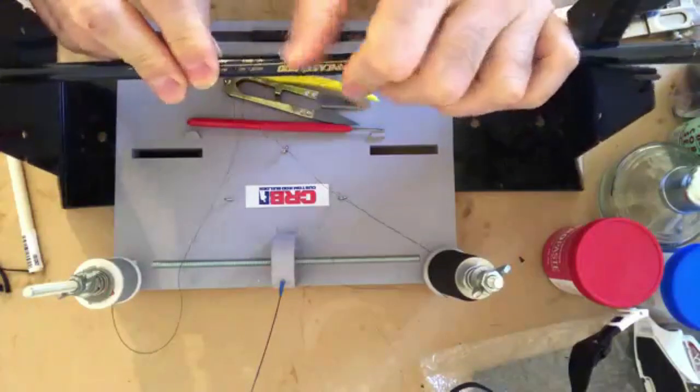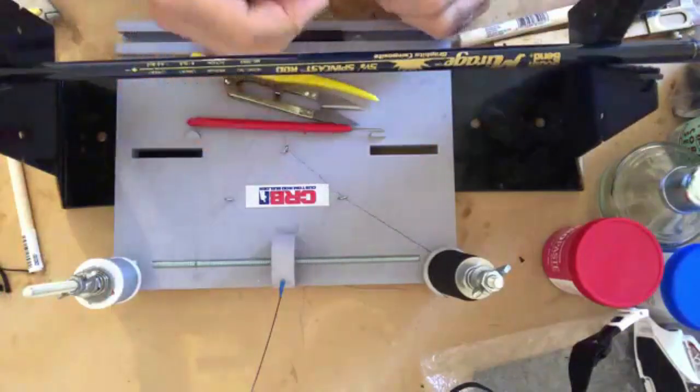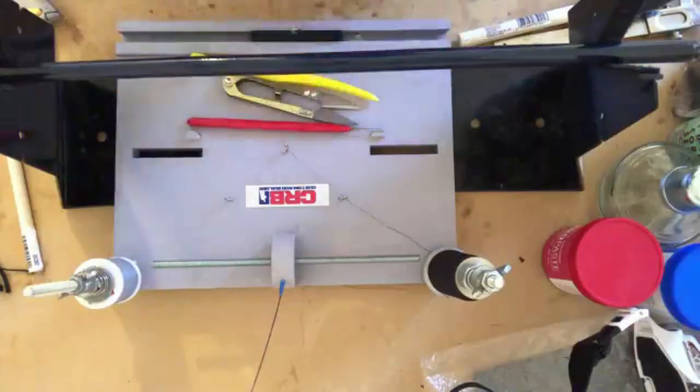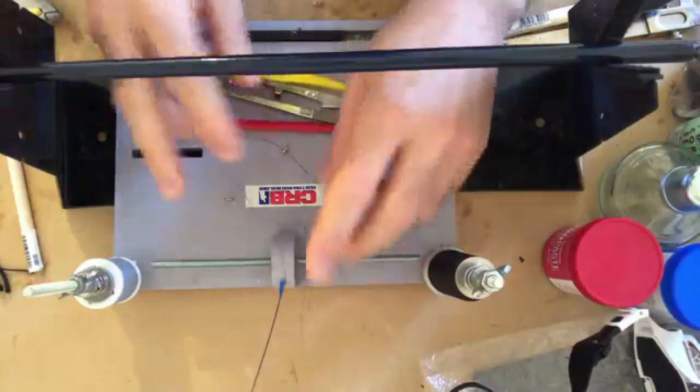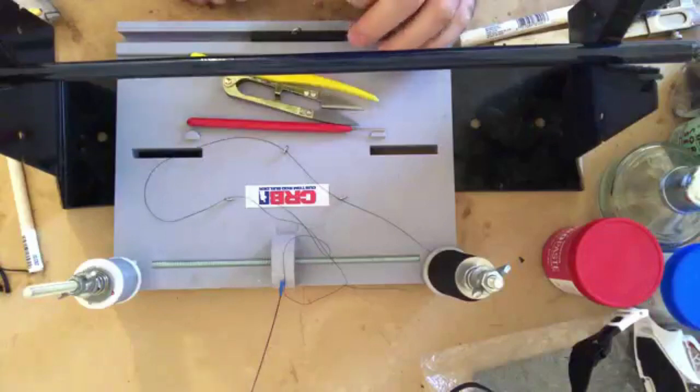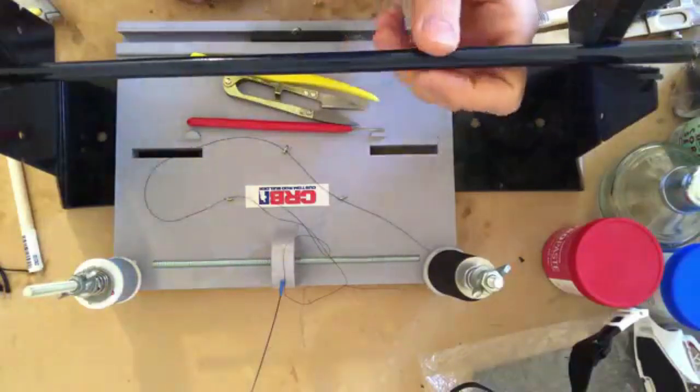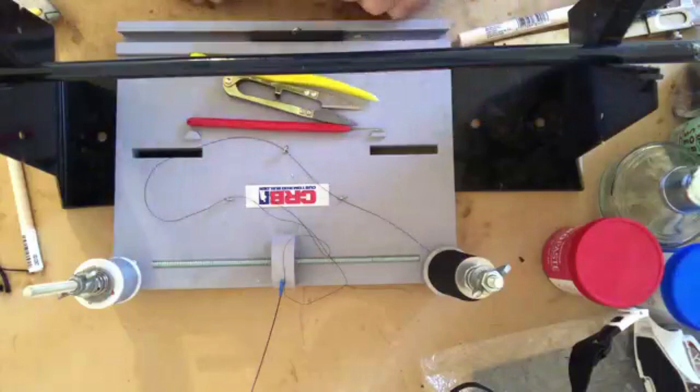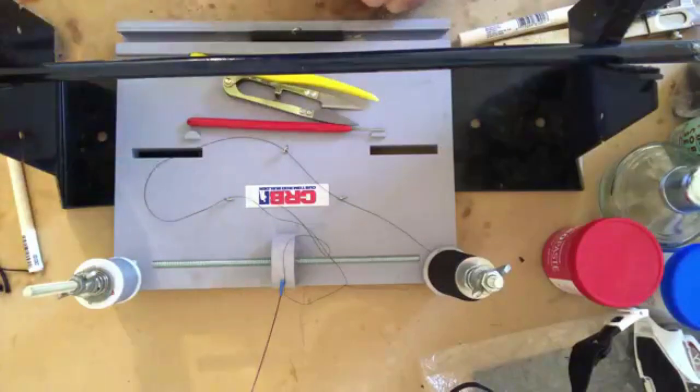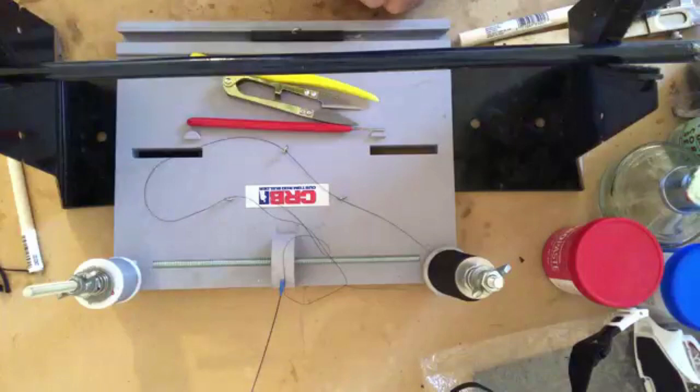Some people don't like using the china marker, they'll use paint or a Sharpie. Most of my rod blanks I use are black, so a Sharpie usually doesn't help very much. But hey, it's whatever people like to use.